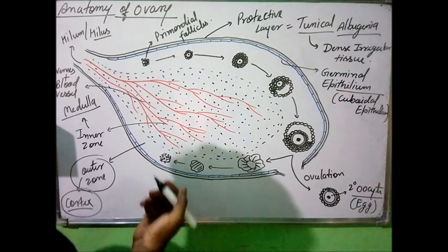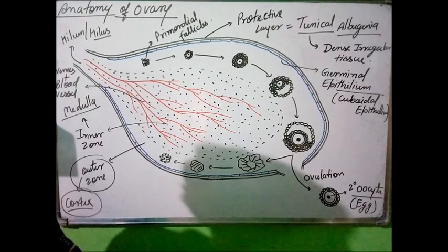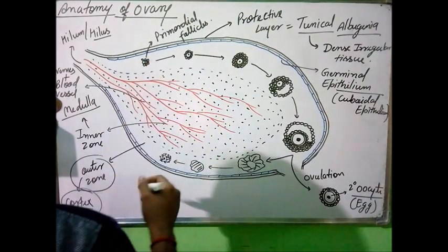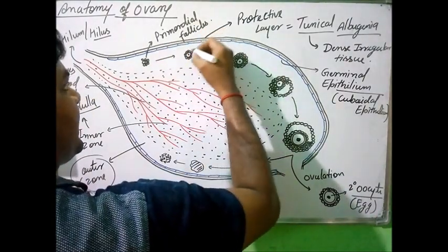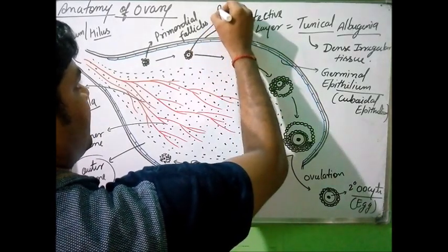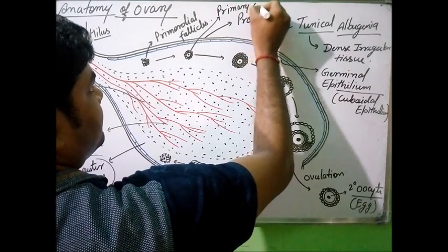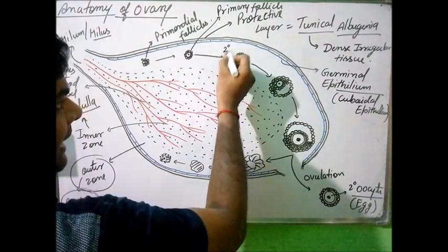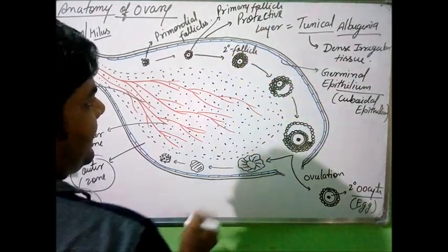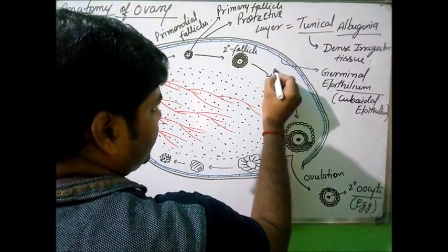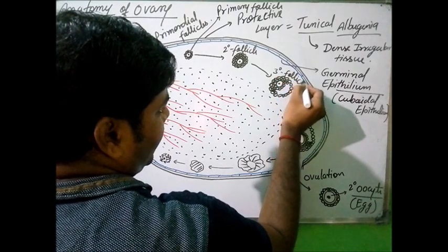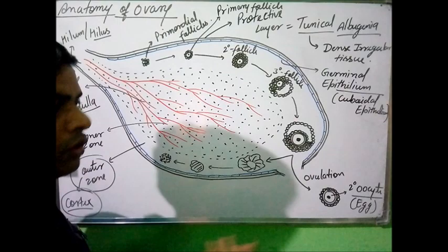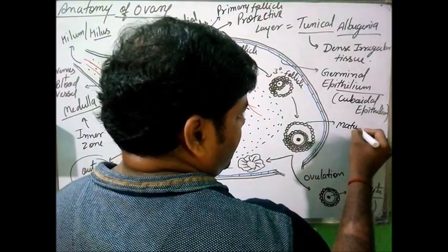Inside the primordial follicle, oogenesis — the development of the female gamete — begins. One cell differentiates and converts into a primary follicle. The primary follicle further develops into a secondary follicle, then into a tertiary follicle, and when the tertiary follicle matures, it becomes a mature follicle.